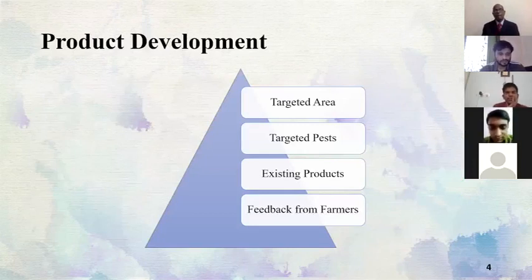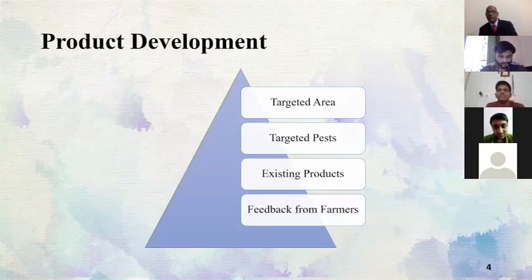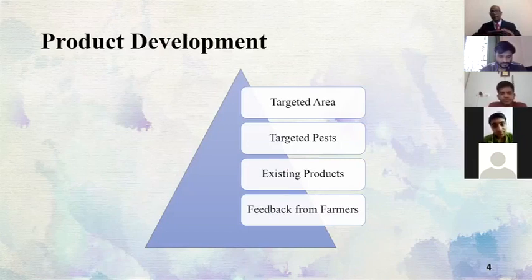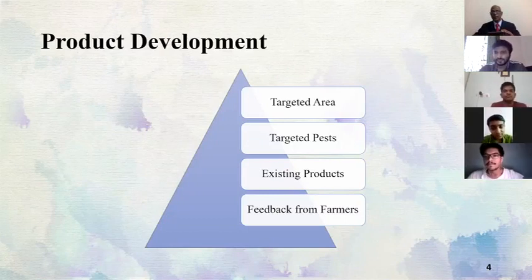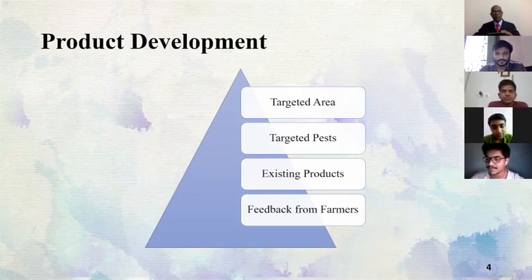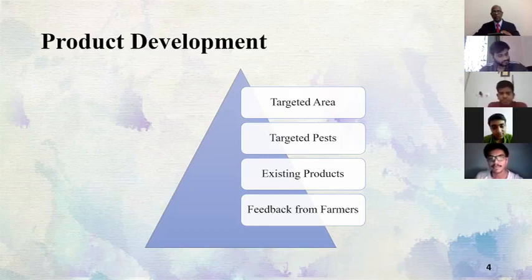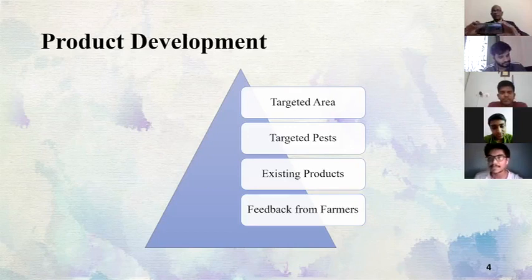When developing the product we have a targeted area. Based on the consumers working in that particular area, as already mentioned, different agroclimatic zones have different requirements — some products might be more suited for one type of agroclimatic zone and another product for a different type. Based on the targeted areas we have to develop the product. We also have targeted pests, since the pests which are more prevalent in one area may differ from other areas.